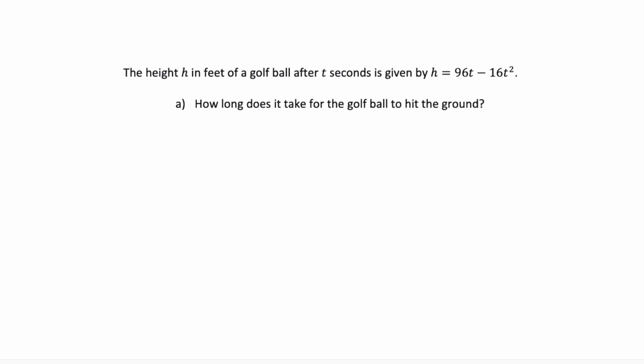Hey everyone, Professor Baldwin here, and this time I have a word problem. The height h in feet of a golf ball after t seconds is given by h equals 96t minus 16t squared.